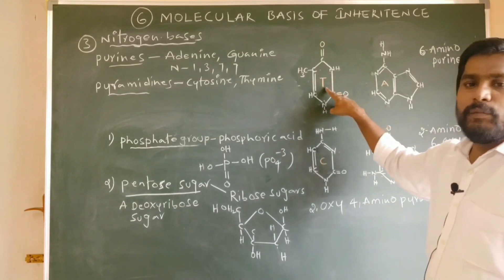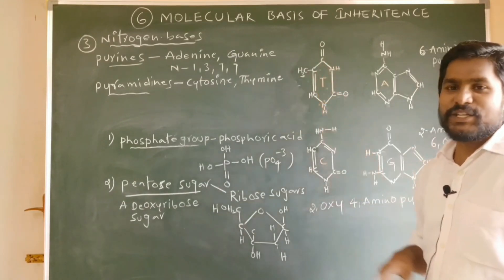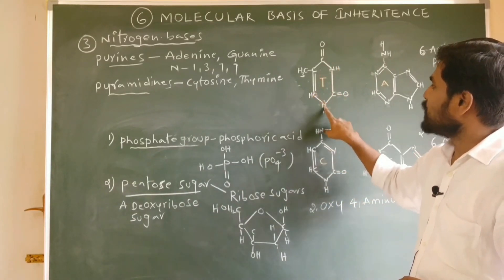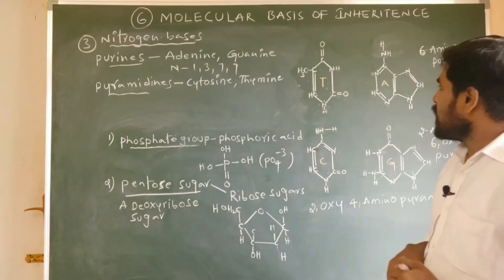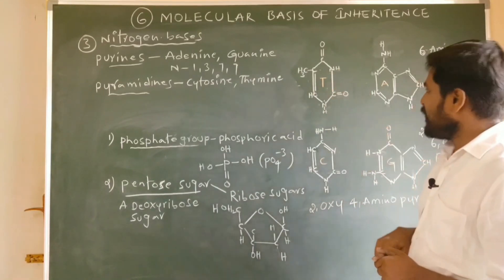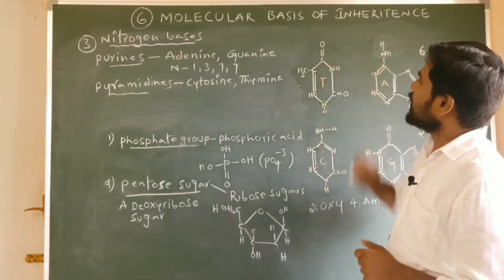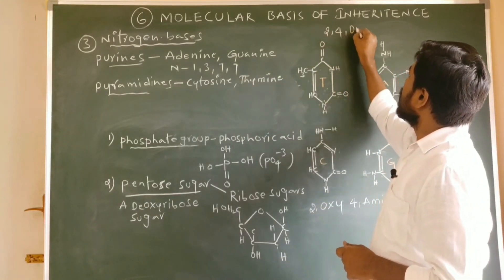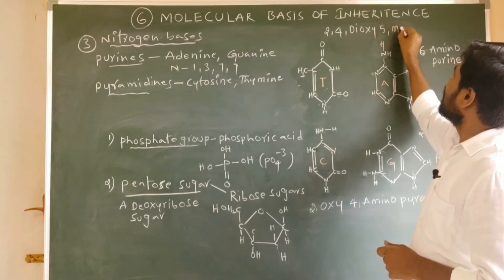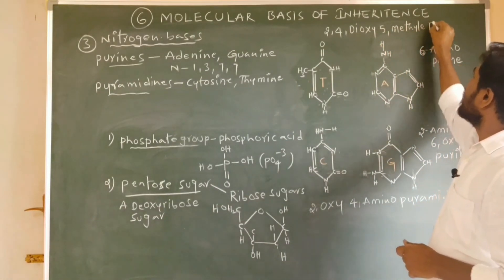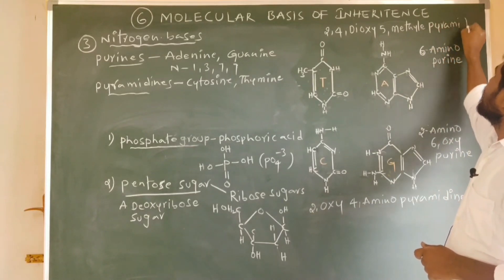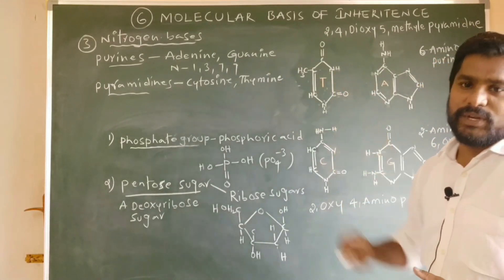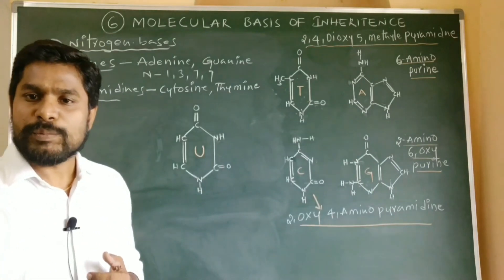Thymine is also a six-membered single-ringed heterocyclic structure showing nitrogen at the first and third positions. According to IUPAC, the scientific name of thymine is 2,4-dioxy-5-methylpyrimidine.